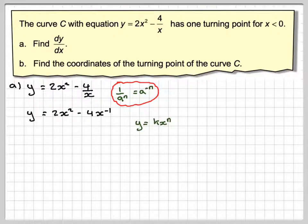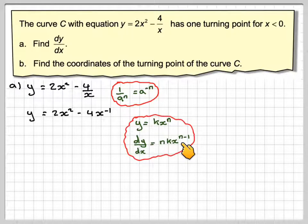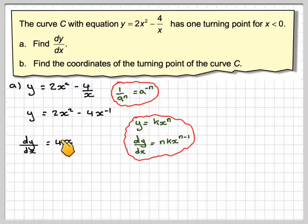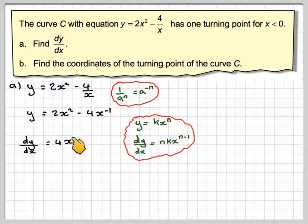We can now differentiate using the rule that y equals kx to the n means bring down the power in front, write down kx, and reduce the power by 1. Doing that for each term, dy/dx is going to be 2 times 2, which gives 4x, and then 2 minus 1 gives x to the 1, but we never write the 1 in.